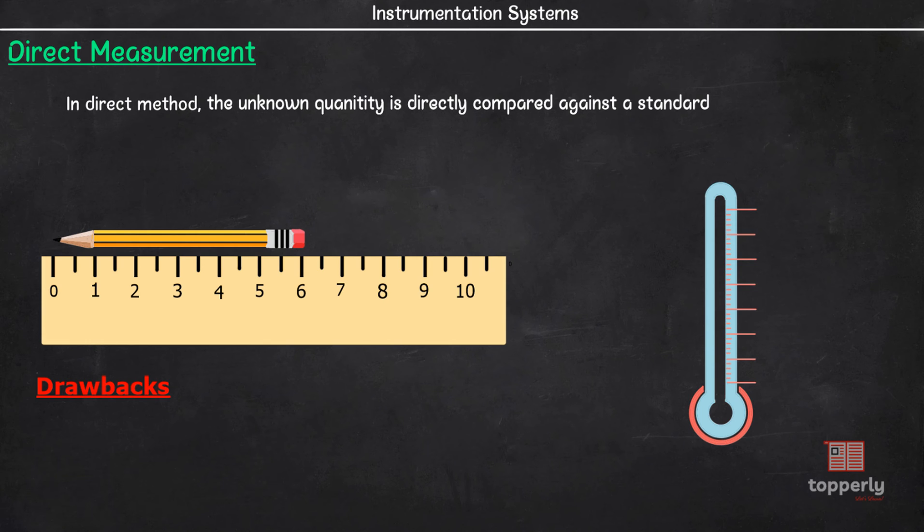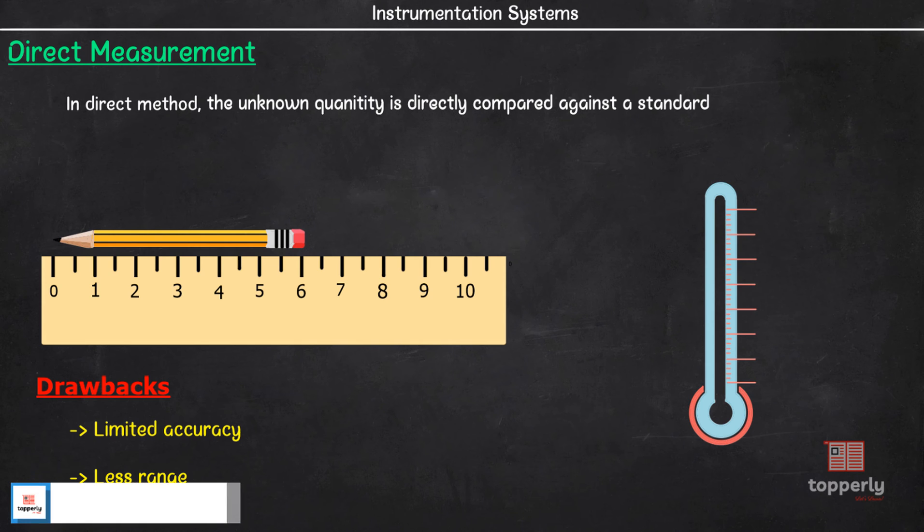But at the same time, direct method of measurement is not very accurate because it depends on human sensitivity in making judgment. For instance, a person can accidentally read the result as 7 cm when the actual result was 6 cm, and this will cause an error. Another disadvantage of this method is that the measurement range is limited. Consider the case of measuring length. If it is 1 or 2 meters, we can easily measure it using a measuring tape. But it will be very impractical to measure 50 to 100 meters using a measuring tape.